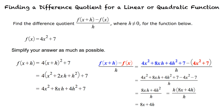So just to make sure I have this right: we begin by finding f of x plus h, then we substitute that and f of x into the difference quotient formula and simplify as much as possible to get our final result. That is correct. Thank you.